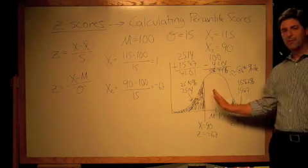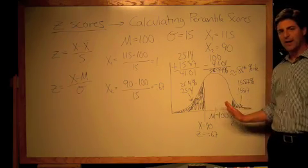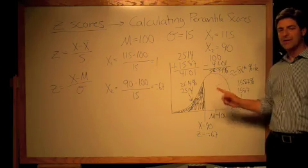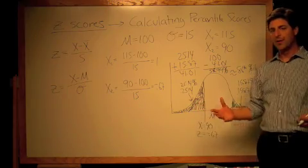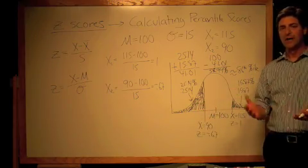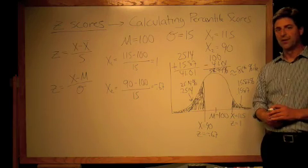This area between a score of 90 and 115 would be 58.99%. So we expect 58.99% of this population to have scores between 90 and 115 on the IQ test.